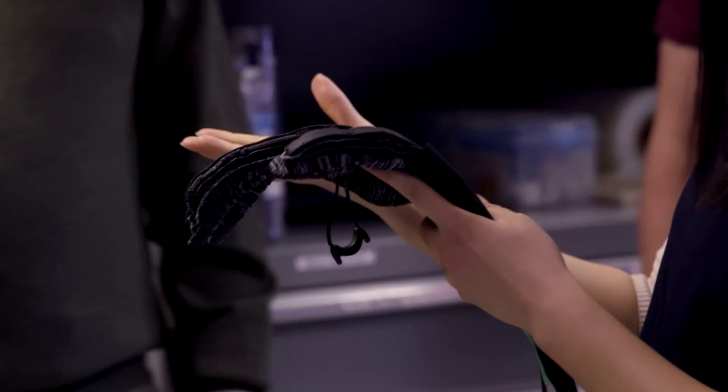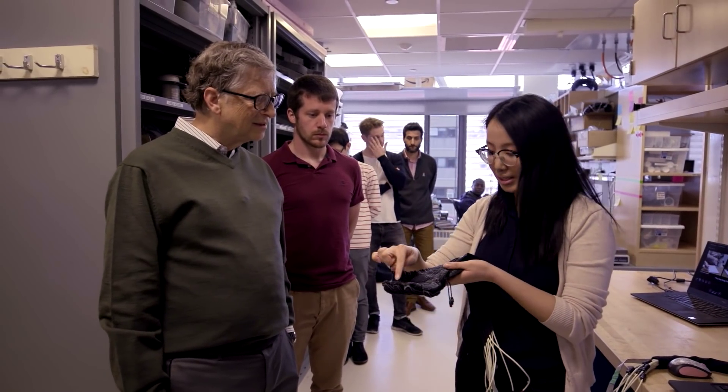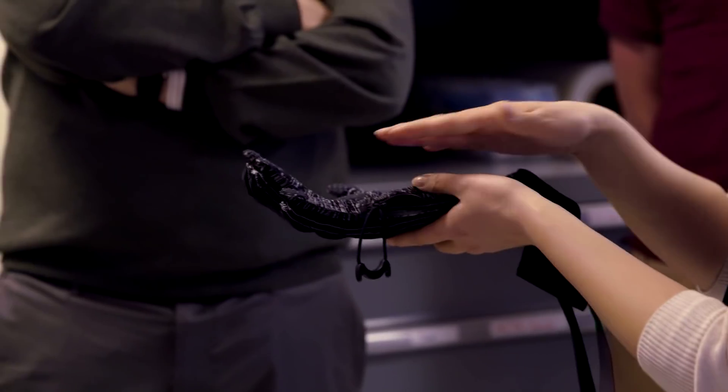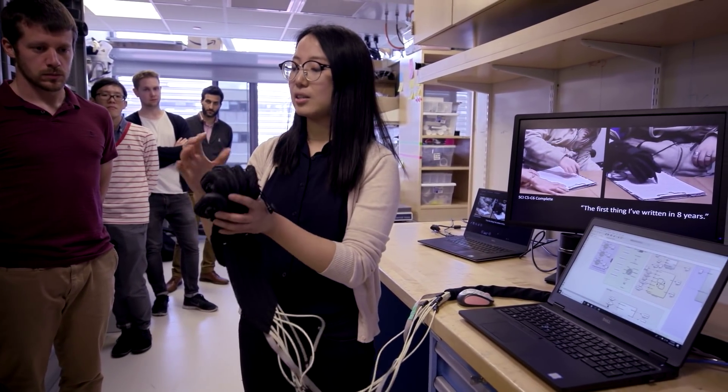One of the projects that we're working on is a soft robotic glove. So it's like any regular glove, but it has embedded air chambers, and then you can pressurize those chambers. And when you do that, it basically helps the hands to close and to open.